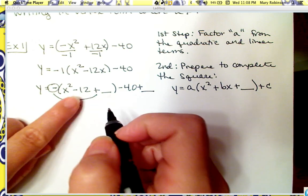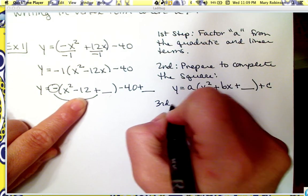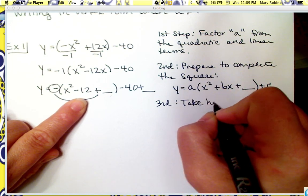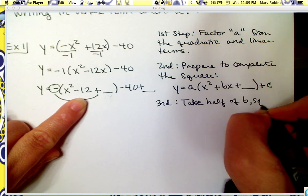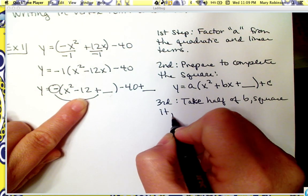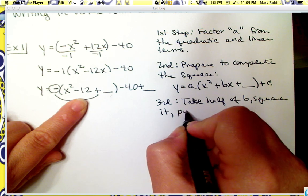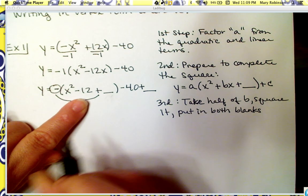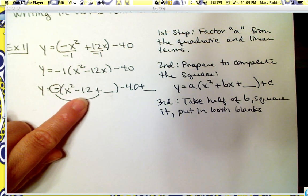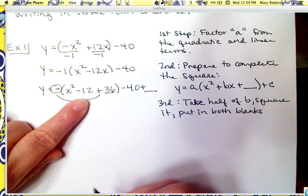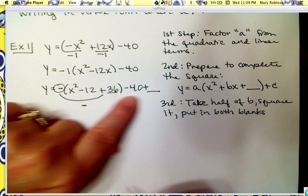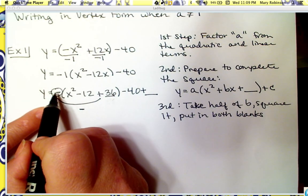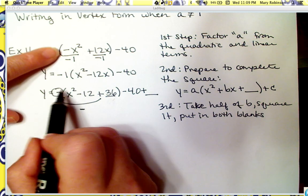Step three is to take half of b, square it, and put it in both blanks. Half of 12 is 6, and 6 squared is 36. Before we were adding 36 and then automatically subtracting 36 so they would cancel out. But if we distribute this negative to each term, we get negative x squared, positive 12x, and then negative times this positive 36 — so we really introduced a negative 36.